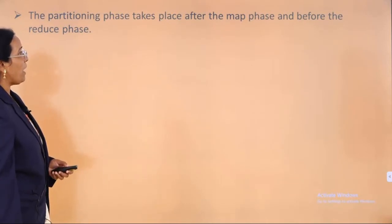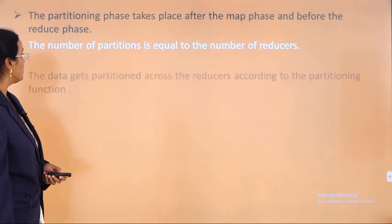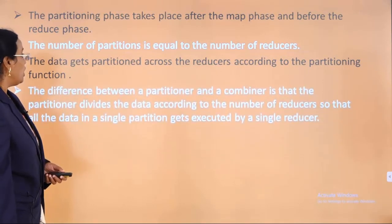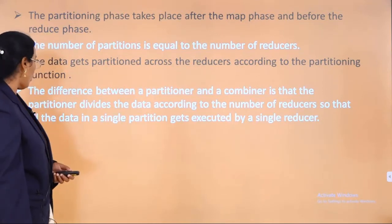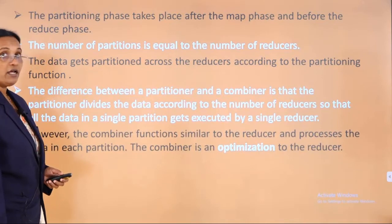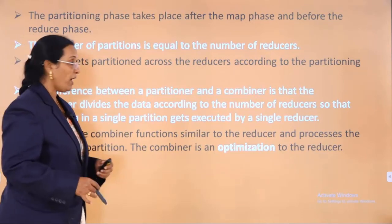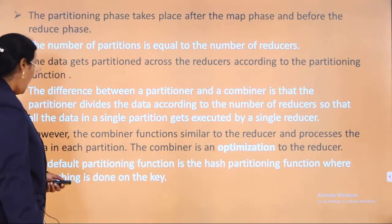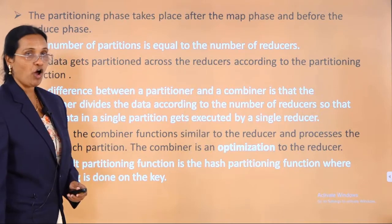The partition phase takes place after the map phase and before the reduce phase. The number of partitions is equal to the number of reducers, and the data gets partitioned across the reducers according to the partitioning function. The difference between partitioners and combiners is that a partitioner divides the data according to the number of reducers so that all data in a single partition gets executed by a single reducer. Combiners function similarly to reducers and process data in each partition — a combiner is essentially an optimization to the reducer. The default partitioning function is the hash function, where hashing is done on the key.